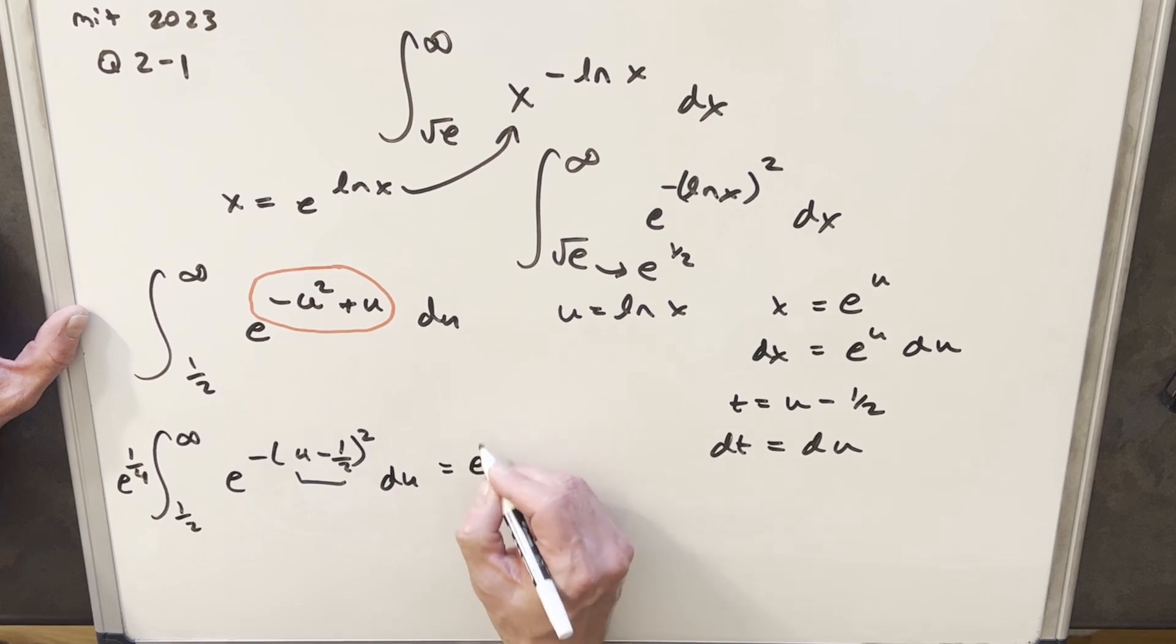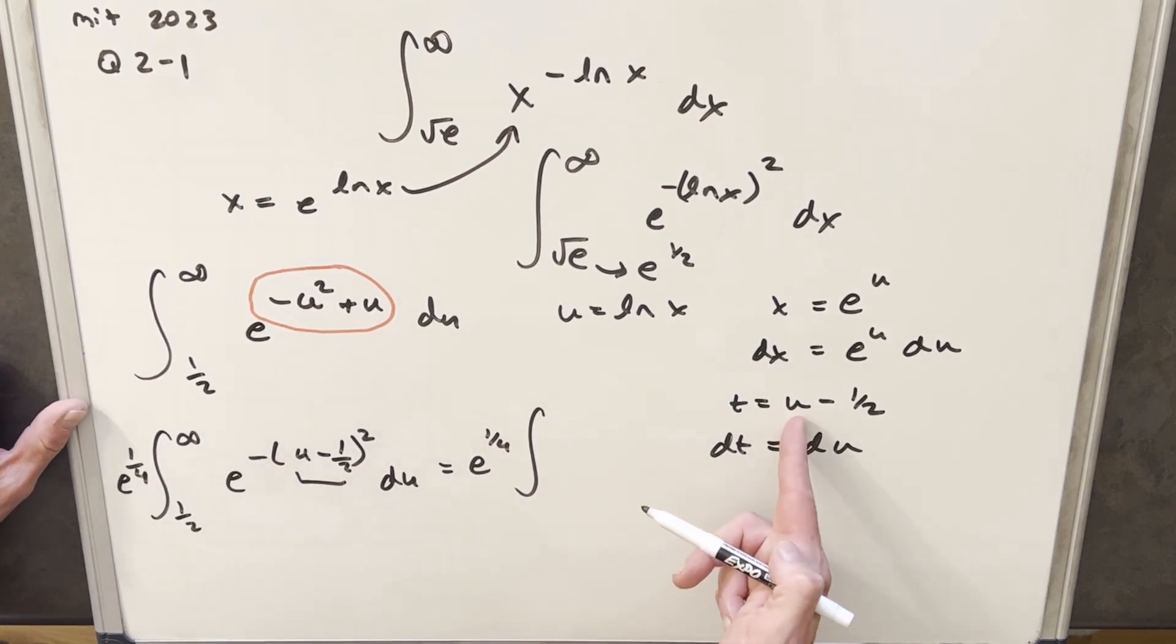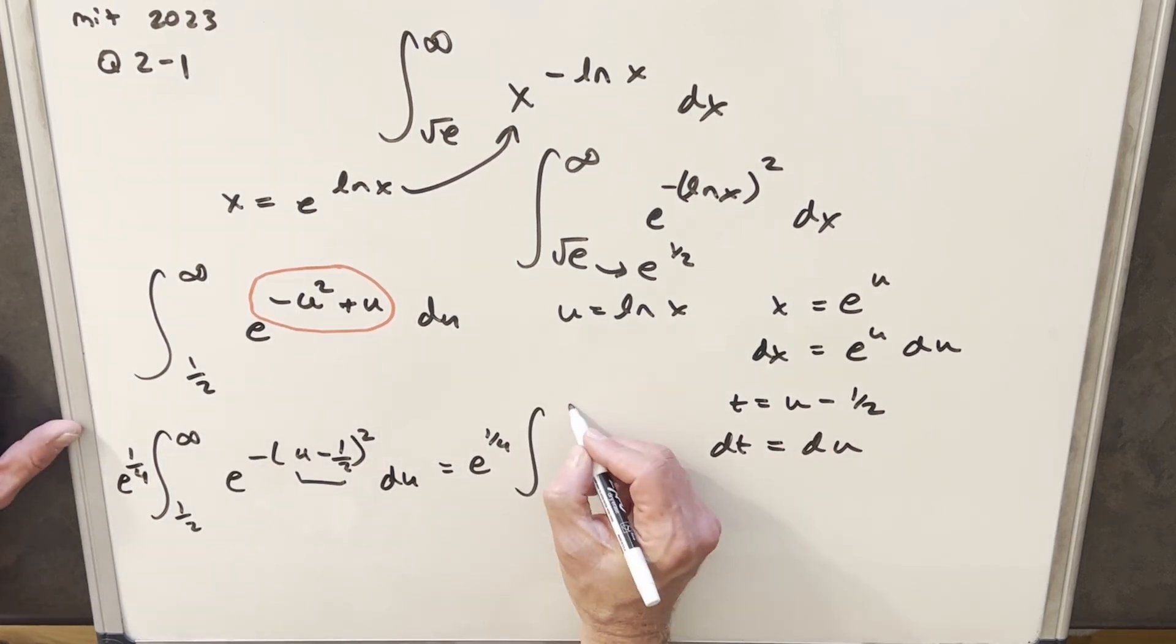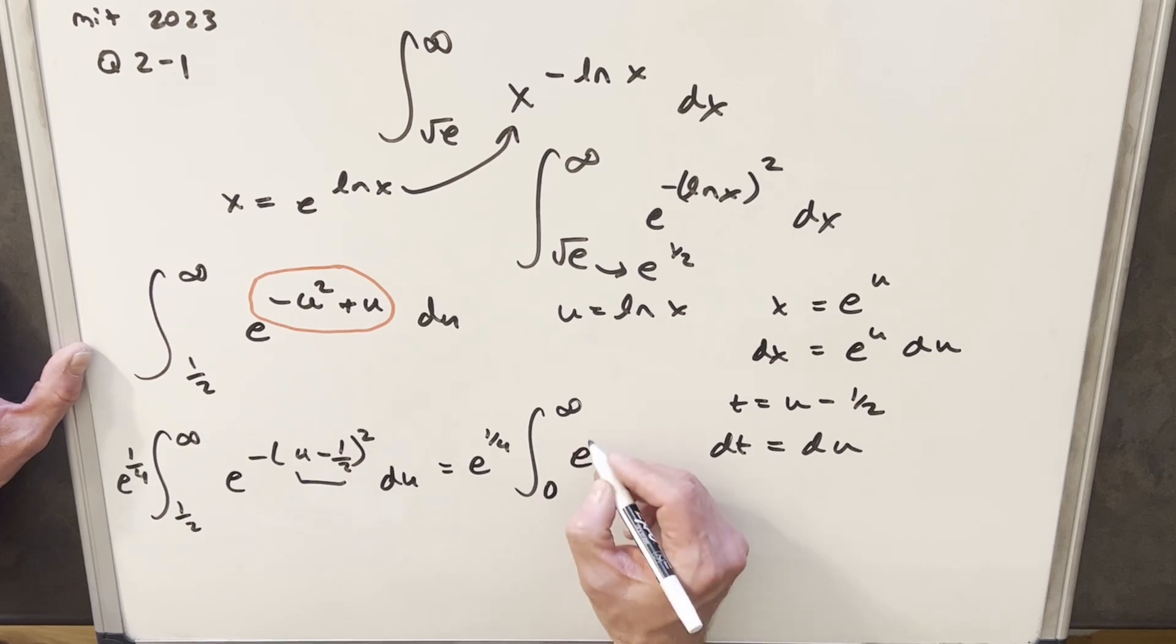So we'll make this substitution real quick. Now plugging infinity in here for u, infinity minus 1 half is still infinity. Plugging a half in, half minus half, now our bounds are zero. Then again, this piece is just going to be t, and we're going to have e to the minus t squared dt.